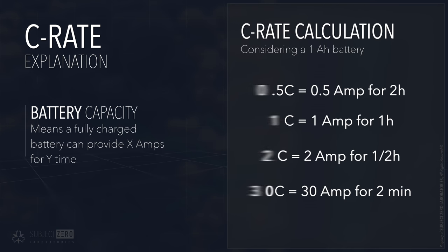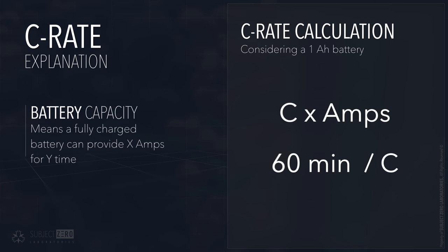1C essentially means that a fully charged battery with a capacity of 1 amp hour is able to provide 1 amp for 1 hour. 0.5C and it provides 0.5 amps for 2 hours. Fundamentally, it comes down to two calculations. Multiplying the battery capacity by the C-rate gives you how much current you will be able to discharge the battery with. Multiplying the C-rate by 60 minutes and you'll get how long you will have that current for.